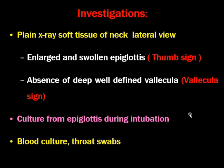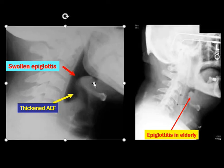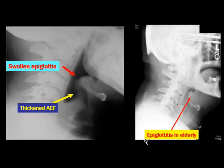Investigations for acute supraglottitis: plain X-ray soft tissue neck lateral view is very important and may be asked in the exam. Findings are enlarged and swollen epiglottis — the thumb sign — and absence of a well-defined vallecula — the vallecula sign. The thumb sign is most commonly asked in the exam. Culture from the epiglottis during intubation can identify the causative organism. Blood cultures and throat swabs are also necessary to rule out atypical organisms. On the plain X-ray lateral view you can see the swollen epiglottis and thickened aryepiglottic folds — the classic feature of acute supraglottitis, seen in both children and adults.